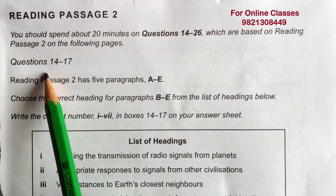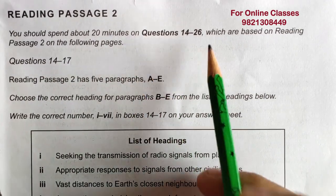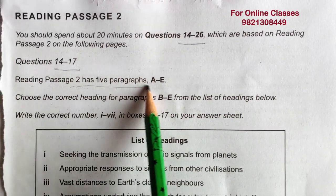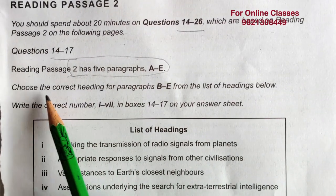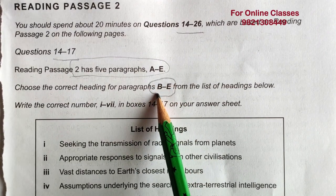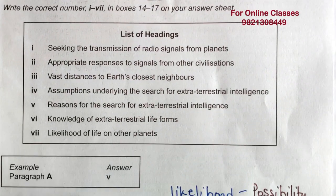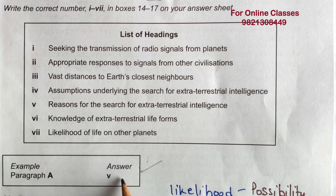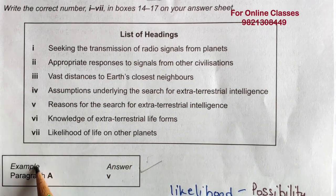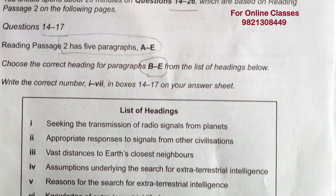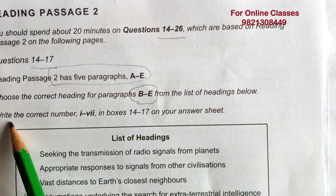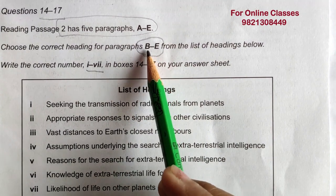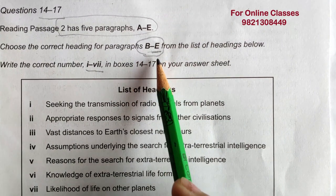The instructions say: spend about 20 minutes on questions 14 to 26, based on reading passage 2. Questions 14 to 17 cover the five paragraphs. Choose the correct headings for paragraphs B to E — not A to E — because paragraph A is already given as an example. In the newer format, giving an example for reading and listening has been discontinued. Write the correct Roman numeral number in front of each alphabet on the answer sheet.